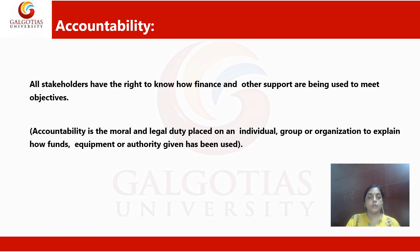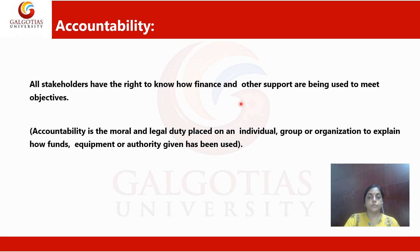The third principle is accountability. All stakeholders have the right to know how finances and other support are being used to meet objectives. Everyone associated with the organization has the right to know what is going on. Accountability is a moral obligation placed on an individual, group, or organization to explain how funds, equipment, or resources have been used.